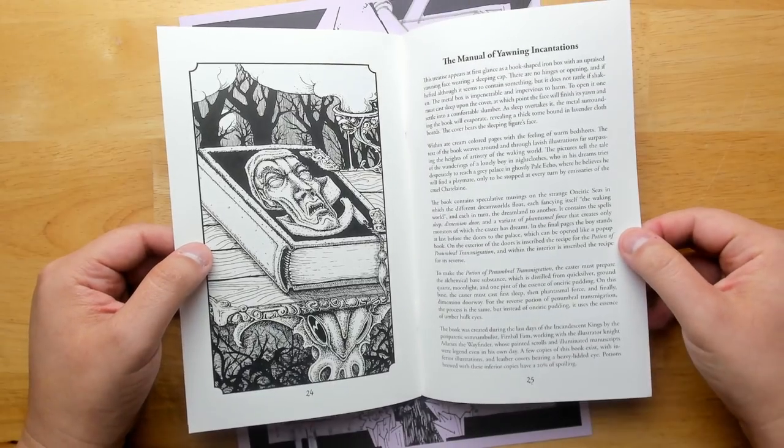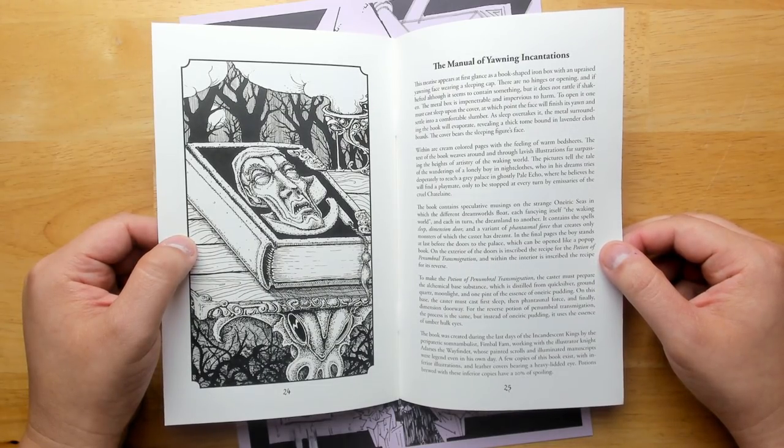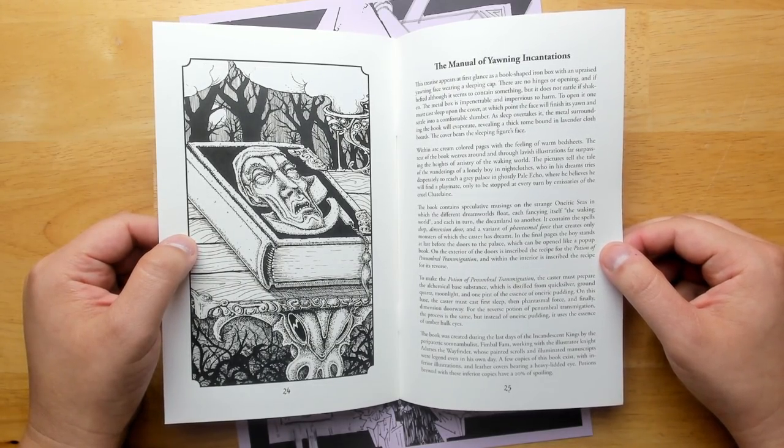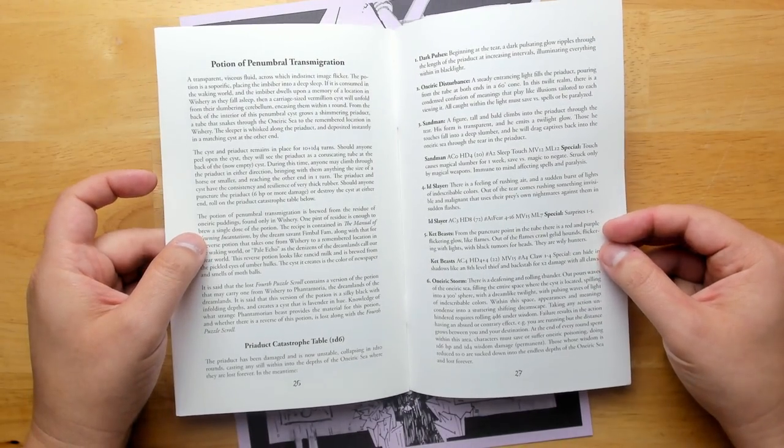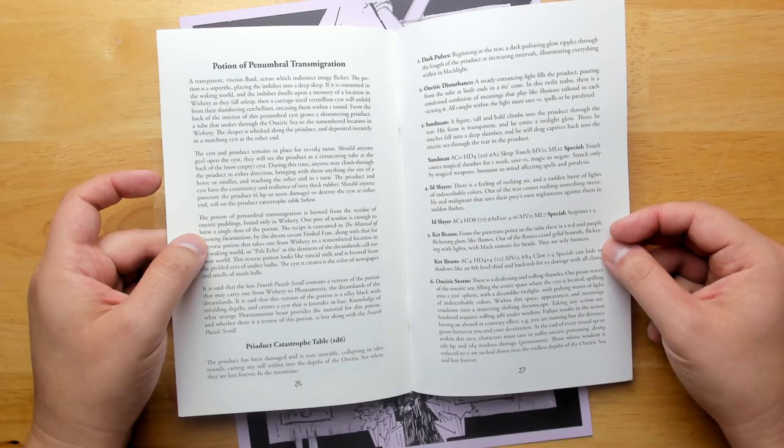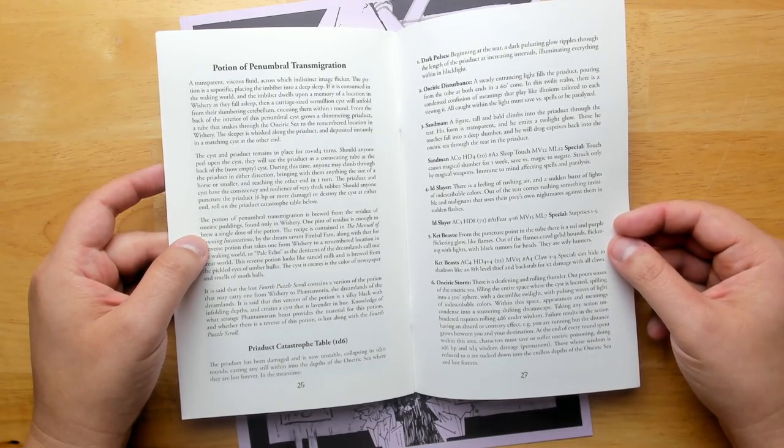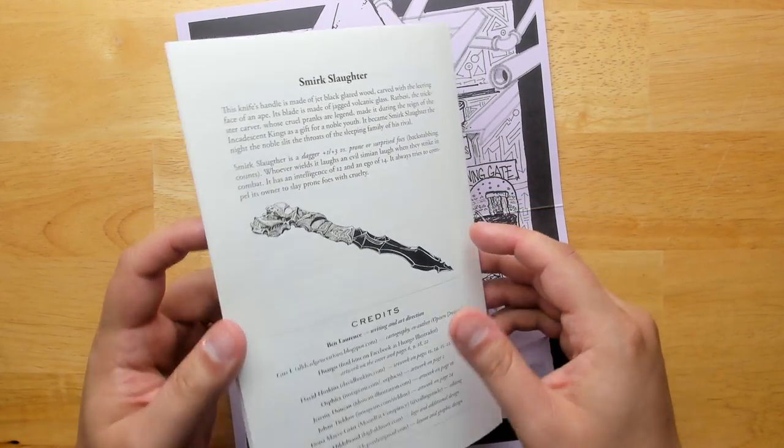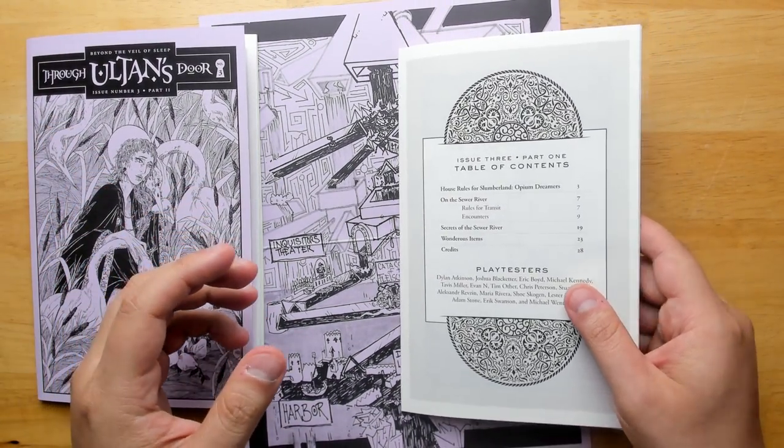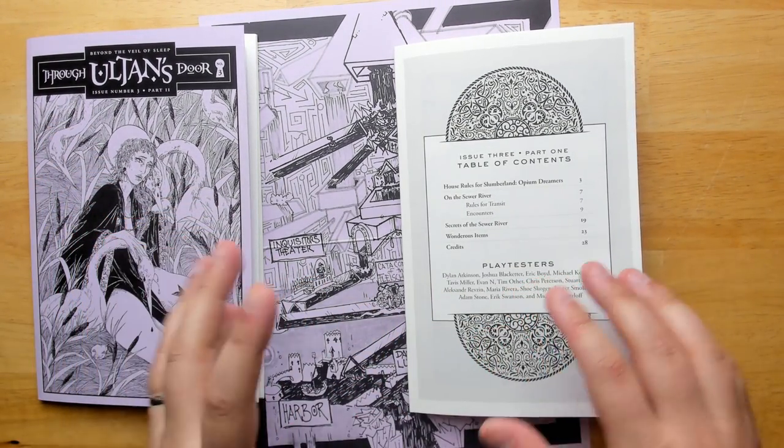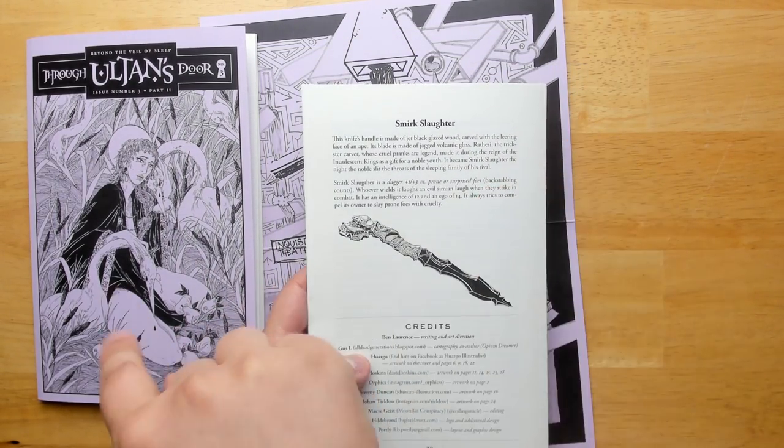Wondrous items, the diadem of the crane may, the manual of yawning incantations. This one's really fun. There's a lot of clever thinking that goes into the design of some of these items. This one has a case around it with a face that looks like it's beginning to yawn and the book will not open unless you cast sleep on the case itself. And then the face finally finishes yawning and you can open it. I love little things like that. Potion of penumbral transmigration. So this is a potion which you can brew, which is going to allow you to physically transport things from the waking world to the dream world and back again.